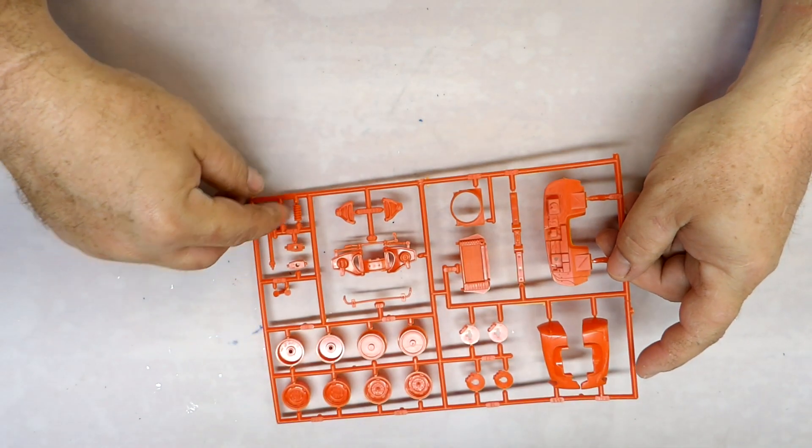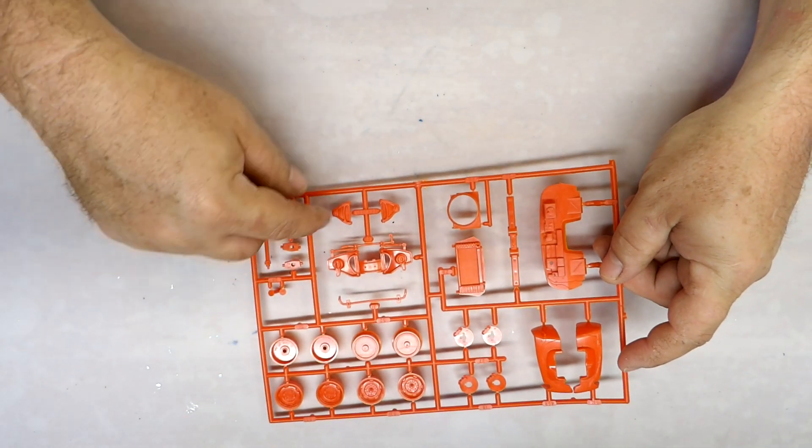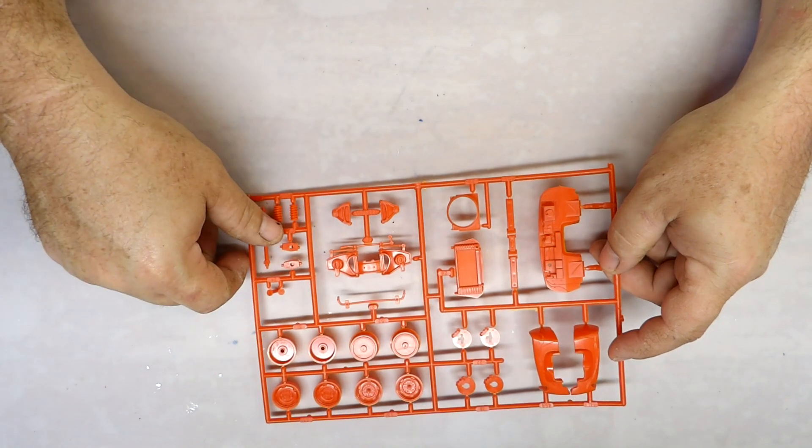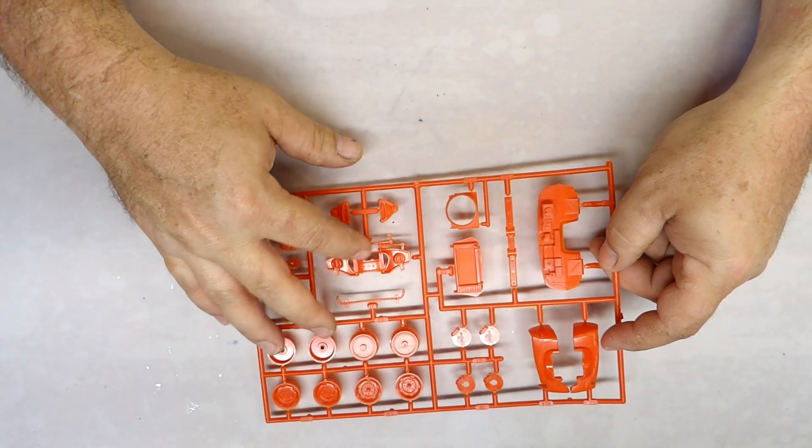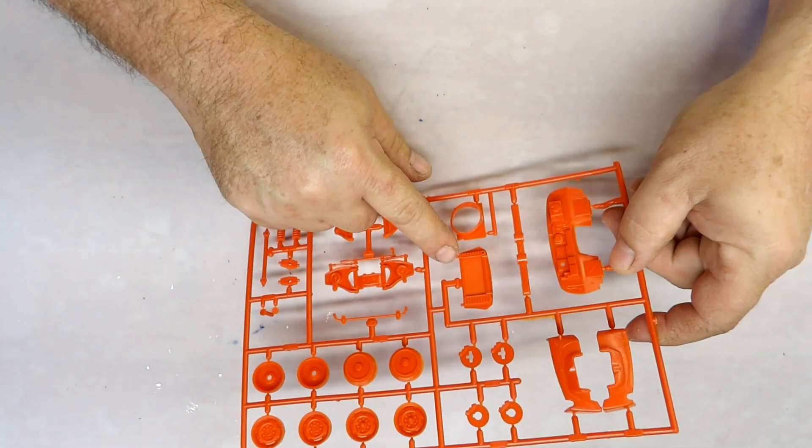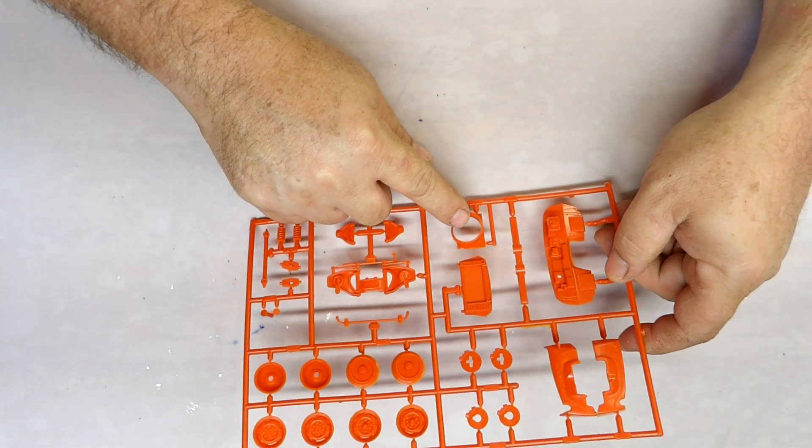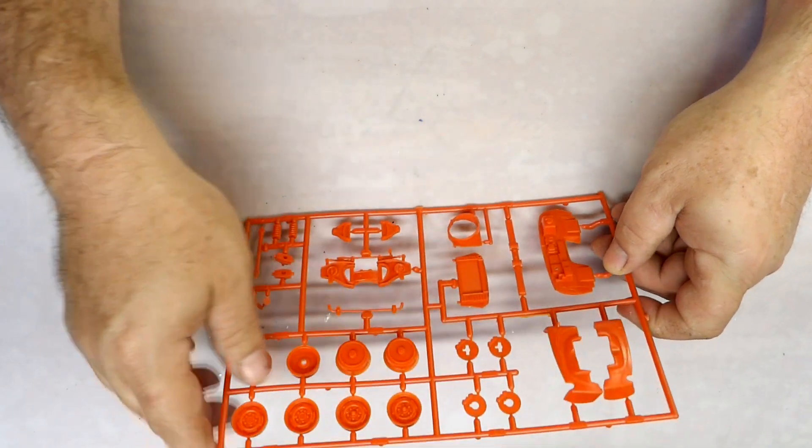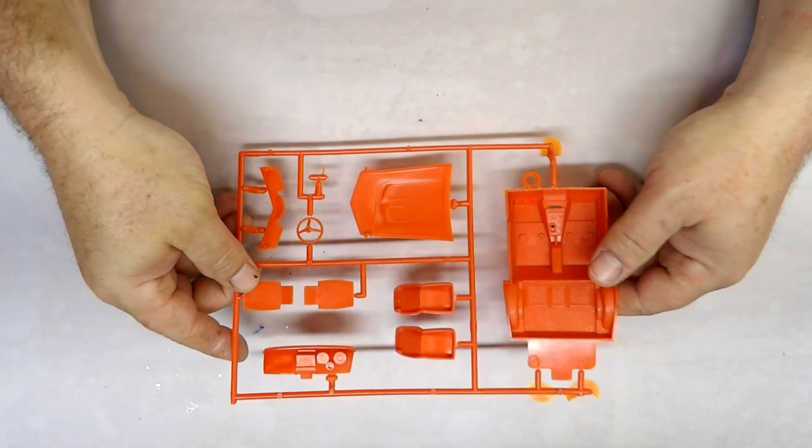And here's your spindles, springs, driveshaft, A-arms, upper and lower with the sway bar, radiator with your shroud, one that looks like a crossmember here.